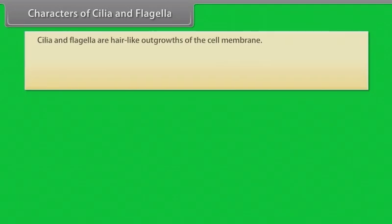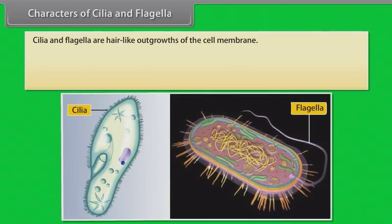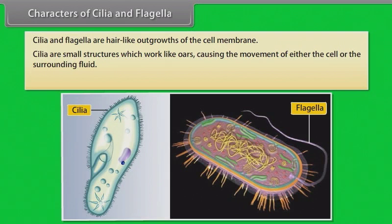Characters of cilia and flagella: Cilia and flagella are hair-like outgrowths of the cell membrane. Cilia are small structures which work like oars, causing the movement of either the cell or the surrounding fluid.